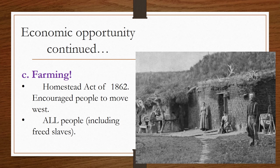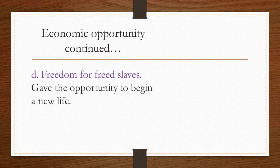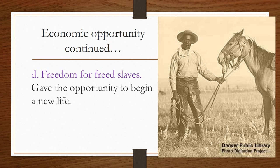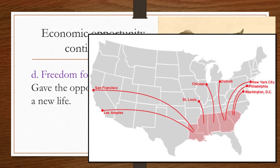The last economic opportunity was freedom. Out west, you're not going to find hardly any slave owners, so freed slaves were heading west. The west provided an opportunity to begin a new life and start over. This map shows how newly freed slaves migrated west and north to bigger towns after the Civil War. After slaves got their freedom, they started moving west — we'll talk more about that later in our Civil War unit.